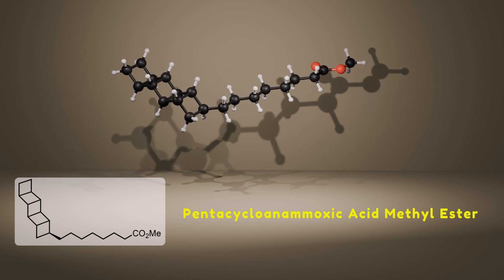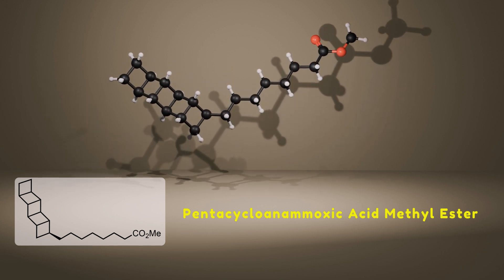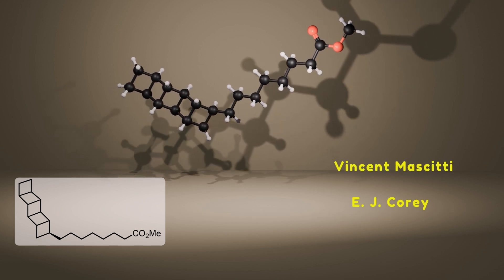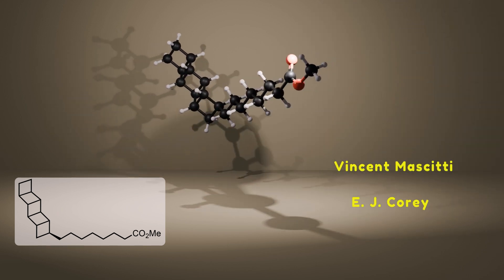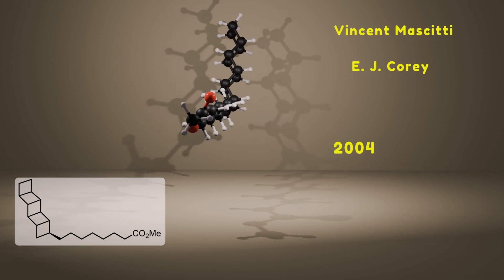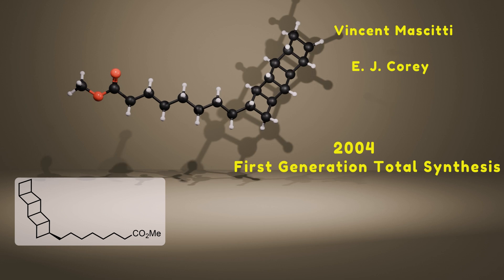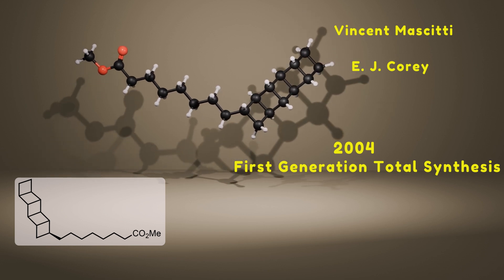Considering unusual biological role and unprecedented ladderane structure, Vincenzo Mascitti and E.J. Corey represented two different total syntheses of this fascinating molecule. In 2004, the first synthesis of pentacycloanammoxic acid methyl ester was reported, in which the target was produced as a racemate.